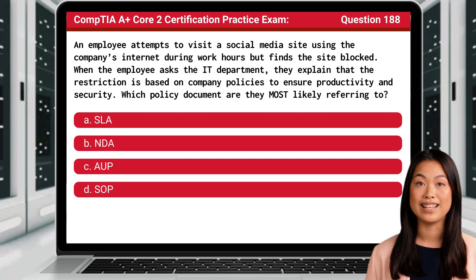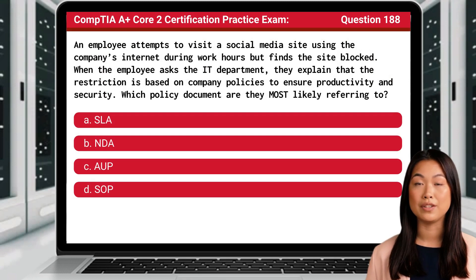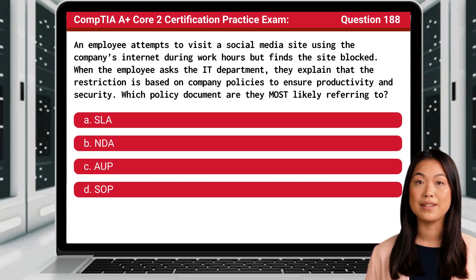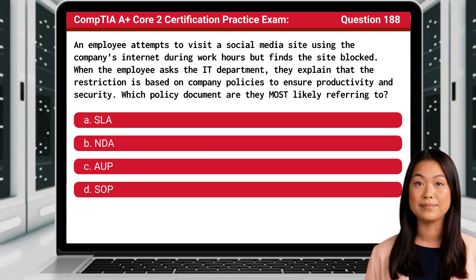Question 188. An employee attempts to visit a social media site using the company's internet during work hours, but finds the site blocked. When the employee asks the IT department, they explain that the restriction is based on company policies to ensure productivity and security. Which policy document are they most likely referring to?